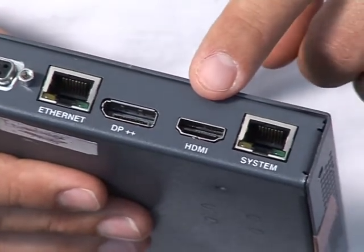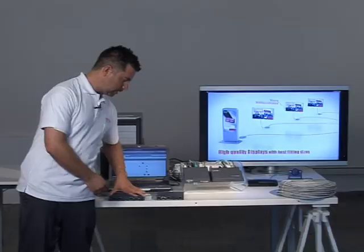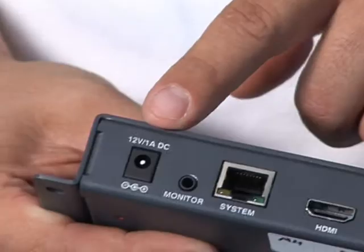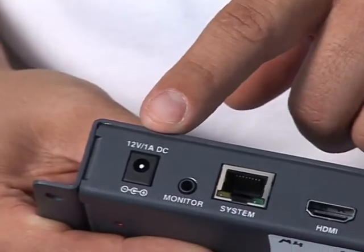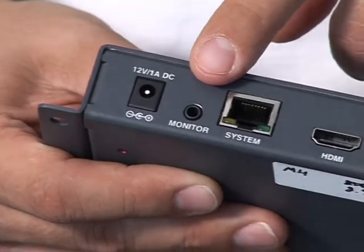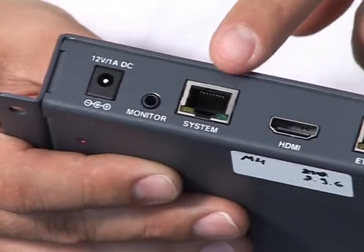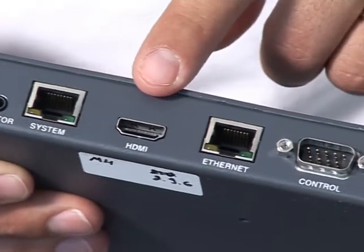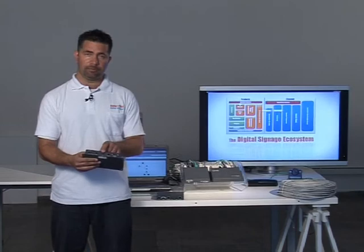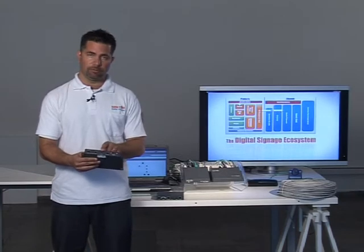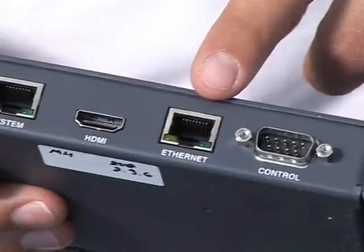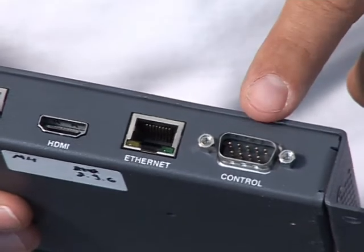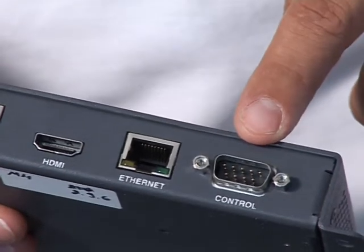And the system cable goes to the receiver. This is the receiver. We have the power, the monitoring connection for proof of performance, the system cable coming from the transmitter, an HDMI cable that goes to the screen, Ethernet enabling IP extension, and a serial cable going to the screen.